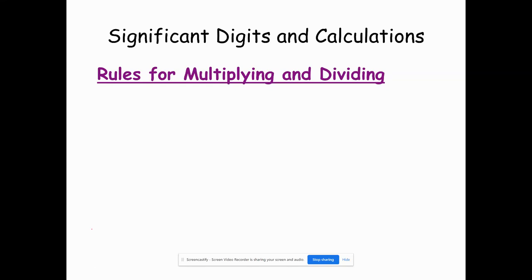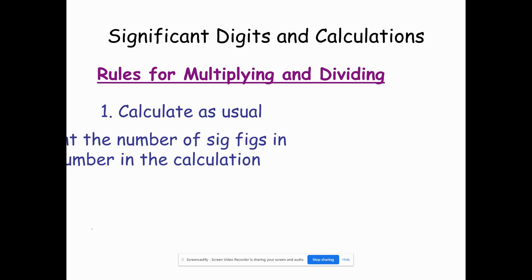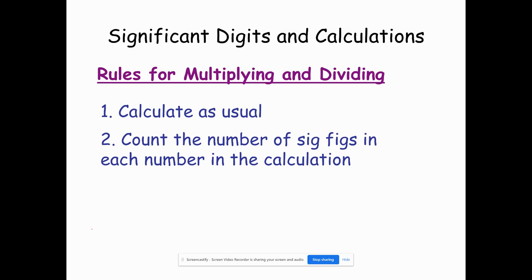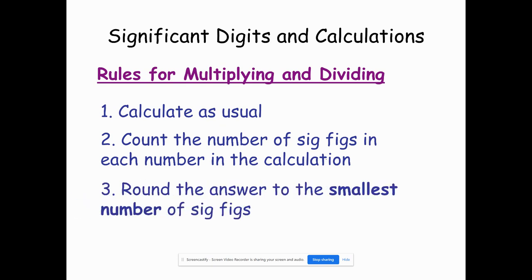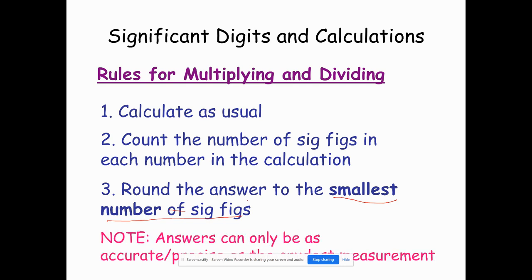We're going to continue on with significant figures, and now we're going to apply our counting significant figures towards multiplying and dividing. When you're multiplying and dividing, you calculate as usual, then count the number of significant figures in each of the numbers that go into the calculation. Then you round your answer to the smallest number of significant figures. You can never have an answer that is more accurate or precise than the crudest measurement — the one with the least significant figures.